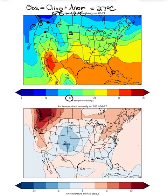So now if I just add those two together, I get 27 degrees Celsius. I can convert that to Fahrenheit by multiplying by nine-fifths and then adding 32, which gives approximately 81 degrees Fahrenheit in Seattle.